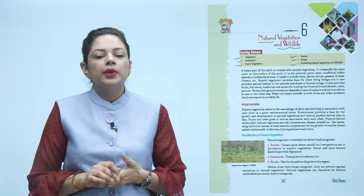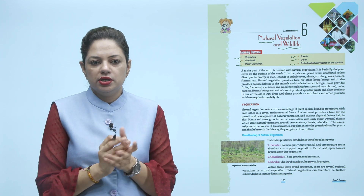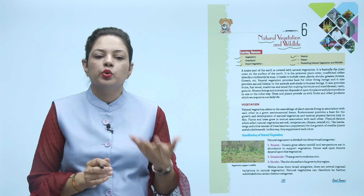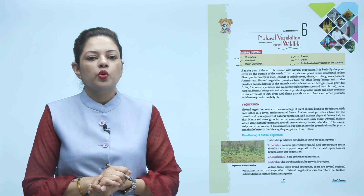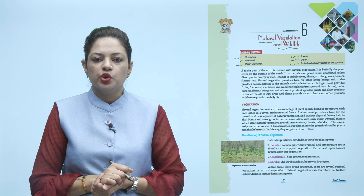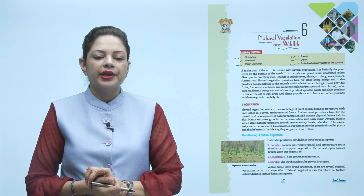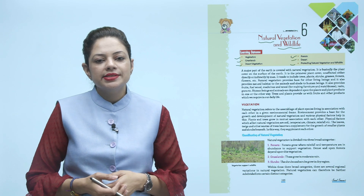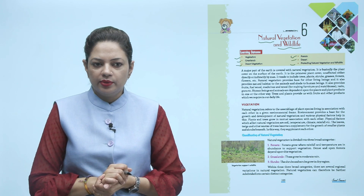Natural vegetation provides a base for other living beings and also provides natural habitat to animals and shelter to human beings. It furnishes fruit, fuel, food, medicine and wood to make furniture and matchboxes, resin, gum, etc. Human beings and animals are dependent on plants and plant products.